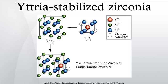Applications. YSZ has a number of applications for its hardness and chemical inertness: as a refractory, as a thermal barrier coating in gas turbines, and as an electroceramic due to its ion-conducting properties. Used in the production of a solid oxide fuel cell, YSZ is used as the solid electrolyte, which enables oxygen ion conduction while blocking electronic conduction.